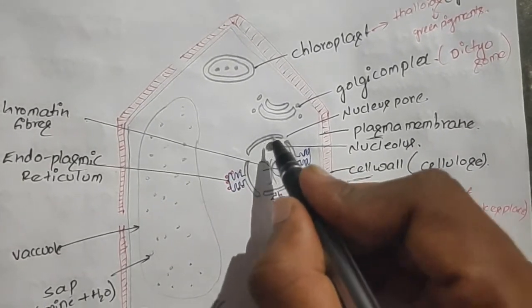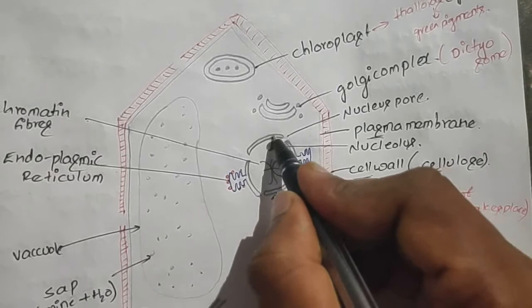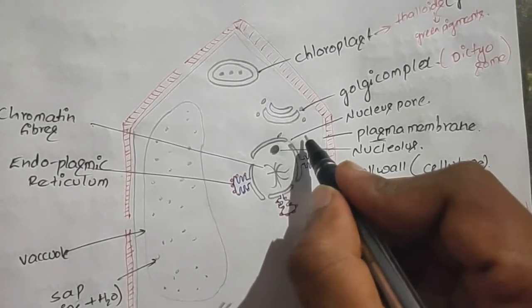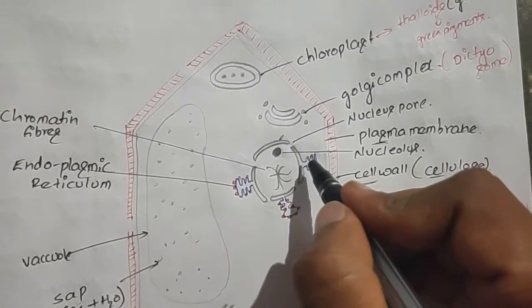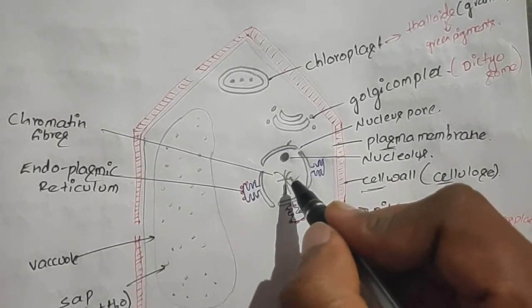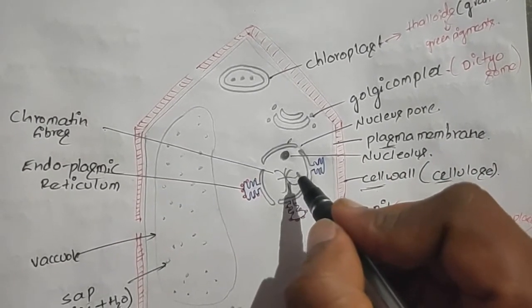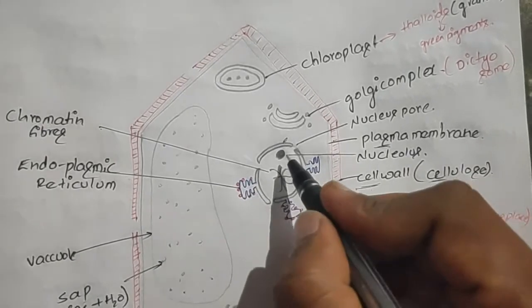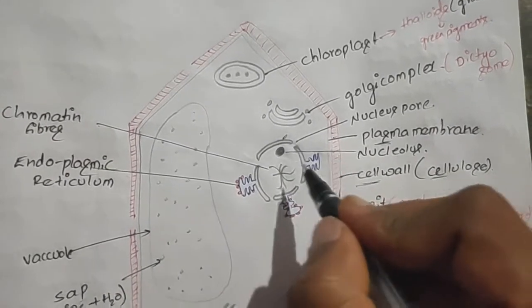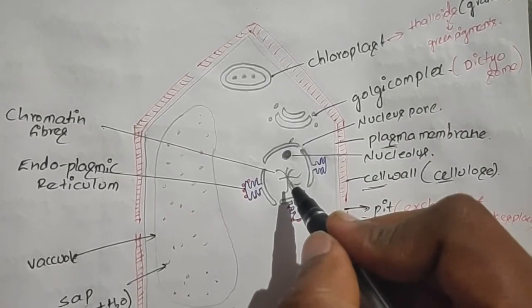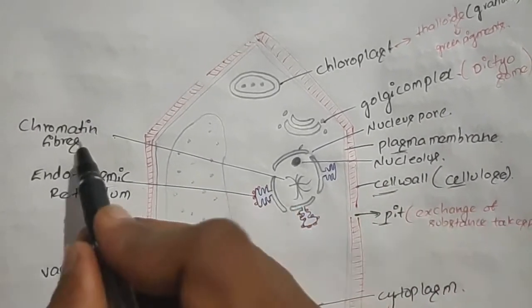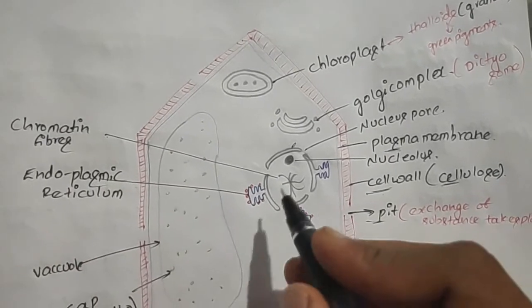The nucleus is not at the center and is shifted towards one side. The nucleus is a double membrane structure. In between the nuclear membrane there is a gap known as the nuclear pore. Inside is a liquid material known as the nucleoplasm, which contains a dark-staining body called the nucleolus and long thread-like structures called chromatin fibers, which contain DNA.